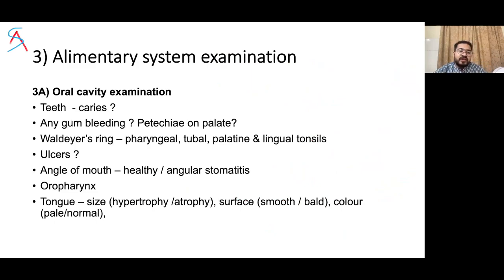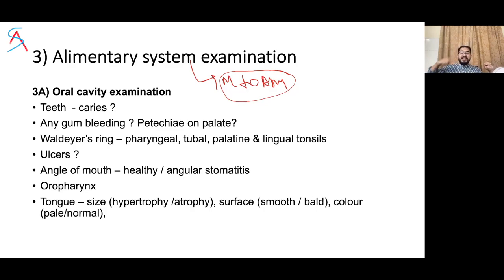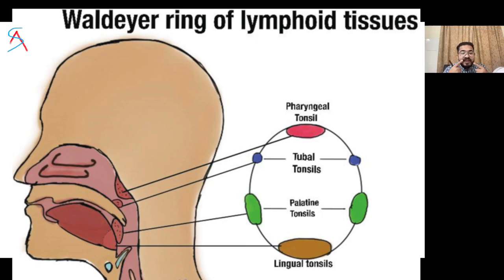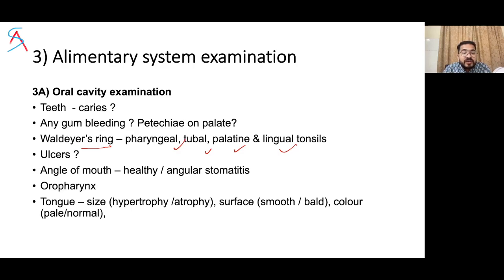Now for alimentary canal examination — remember it runs from mouth to anus. Start with the oral cavity. Look at teeth for caries, gum bleeding, petechiae on palate. Examine Waldeyer's ring: the inner ring consists of pharyngeal tonsils, tubal tonsils, palatine tonsils, and lingual tonsils. Waldeyer's ring is a lymphatic ring that enlarges in non-Hodgkin's lymphoma.